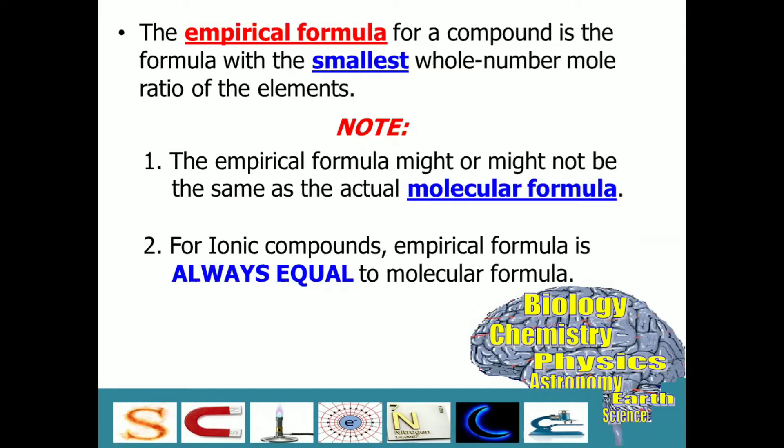Second, for ionic compounds, empirical formula is always equal to molecular formula. As you recall, ionic compounds are composed of metal and non-metal, and its formula is always in the simplest form. Thus, its empirical and molecular formula are just the same.